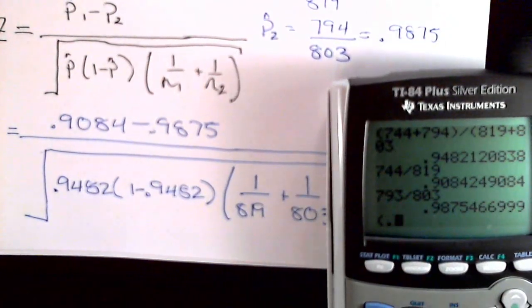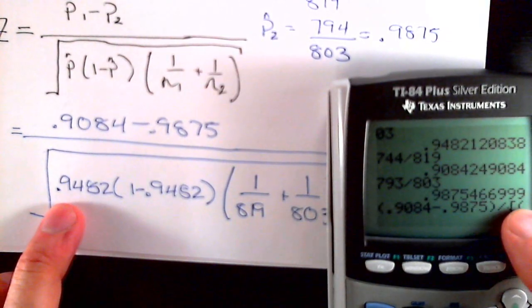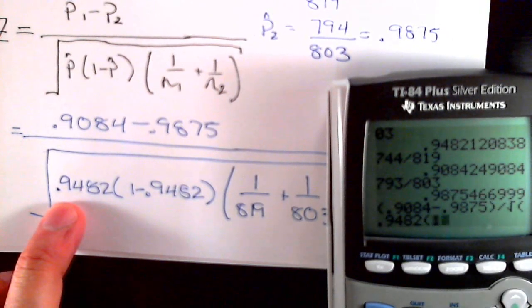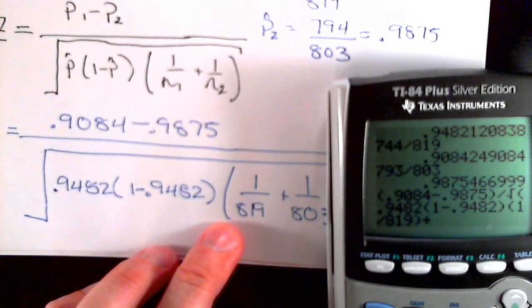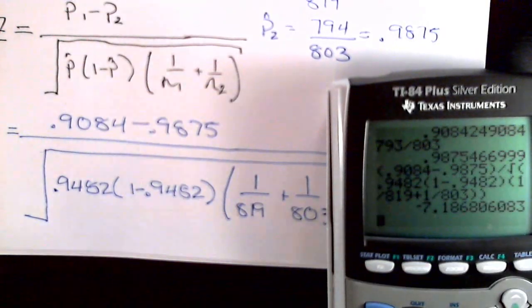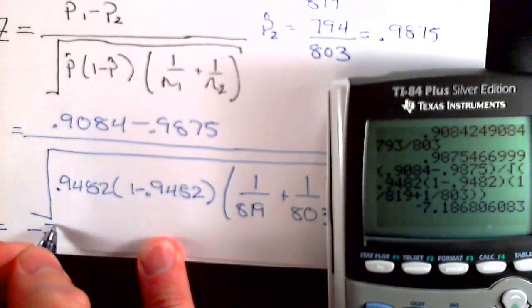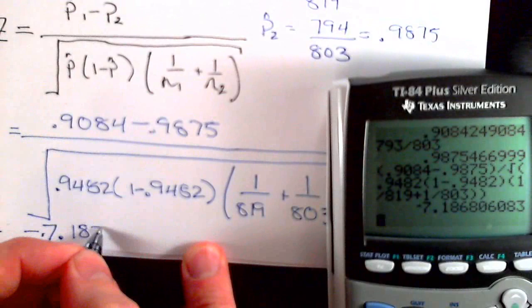In the numerator it's the difference 0.9084 minus 0.9875 divided by the square root, and then it's 0.9482 times 1 minus 0.9482, then it's 1 divided by the first sample plus 1 divided by the second sample. That closes the parenthesis there, and then for the radicand, and this test statistic is negative 7.187.